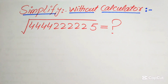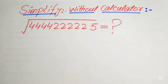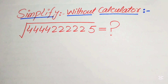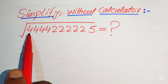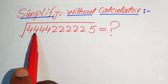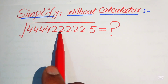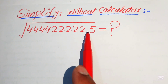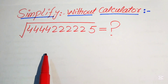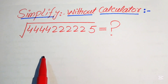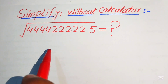Hello everyone. How to simplify this nice algebraic expression: 4444... multiplied by 2222... into 5, and its whole square root. Here we need to simplify this algebraic expression.